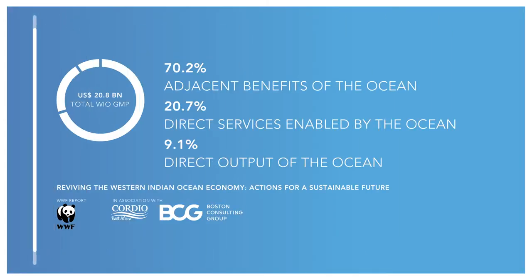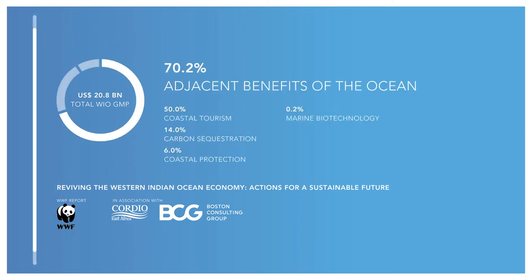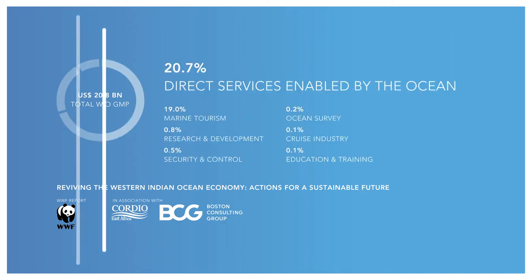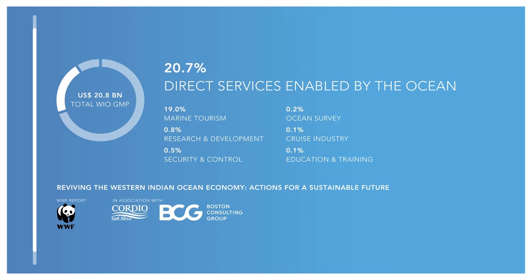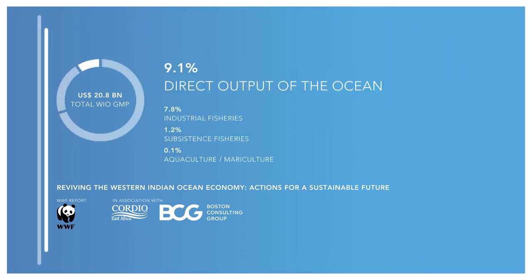The key components of the ocean gross marine product include three main categories. The largest one is the adjacent benefits of the coastal zone, which includes coastal tourism, carbon sequestration and coastal protection. The second category is the direct services enabled by the ocean, such as marine tourism. The third category includes direct output of the ocean, such as fisheries and aquaculture.